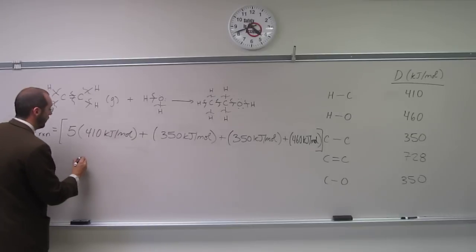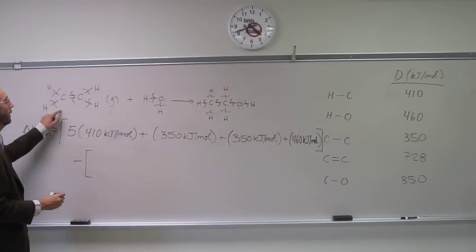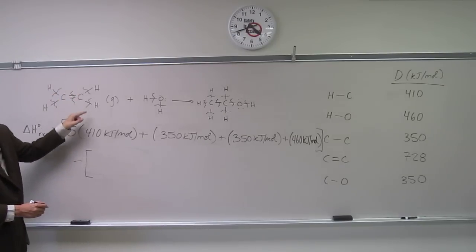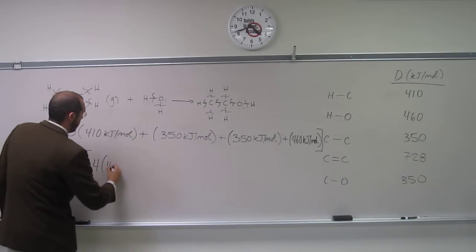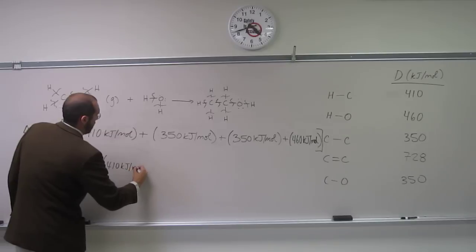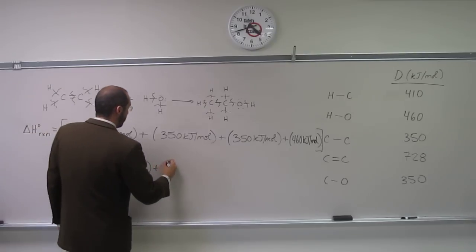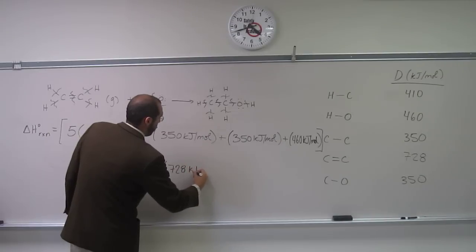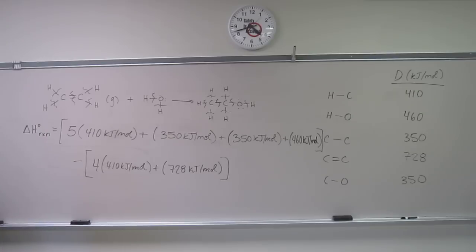And so then we're going to do what? Subtract the reactants from that. In the reactants, what do we have? One, two, three, four CH bonds. So four times 410. We're going to add that to one C=C double bond. And that's it. Is everybody okay with that?